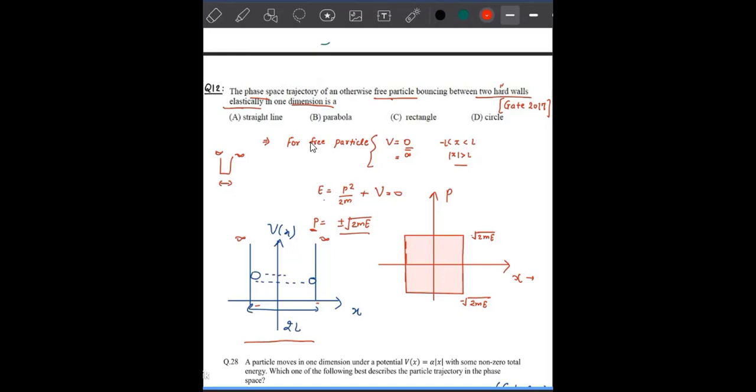take values plus or minus √(2mE). So it has two values: √(2mE) and -√(2mE). At x equals L and x equals -L, your potential is zero. So your phase space trajectory is constant - it is not changing with your potential.